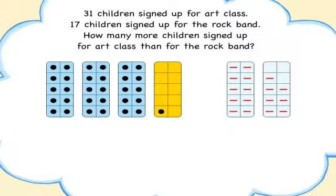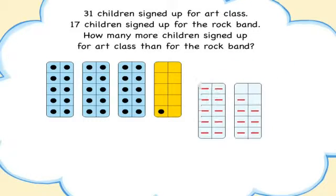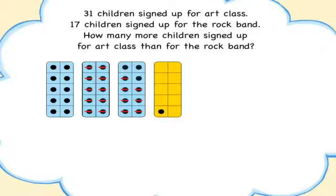Model the lesser number with dash tiles. Match tiles one to one. How many more children signed up for art class than for the rock band? You can see that 14 dots are not dashed out, so 14 more children signed up for art than for the rock band.